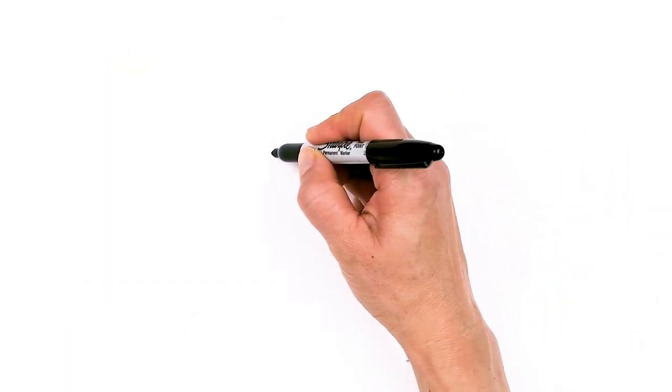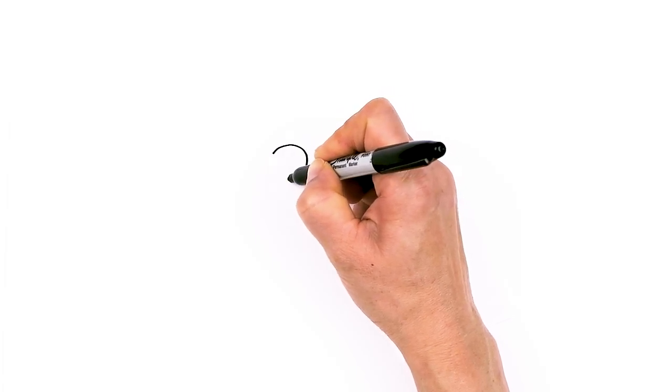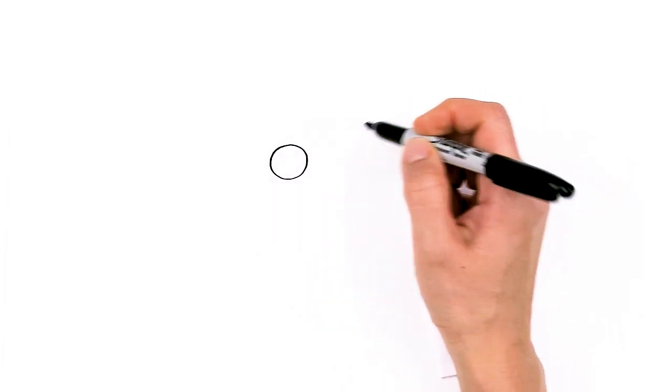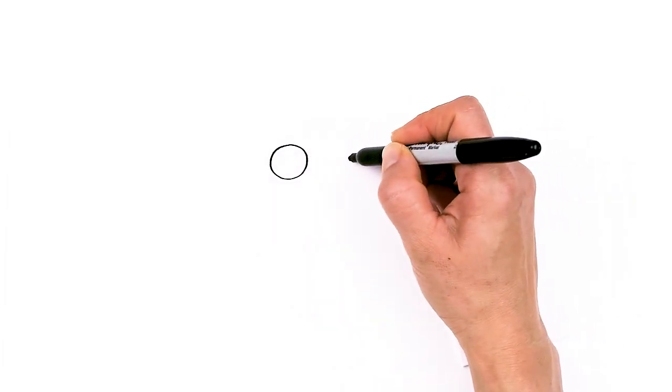To draw this cute cat, let's first start by drawing its eyes. I'm gonna come right here and draw a big circle, and I'm gonna come right across about this way and draw another circle.